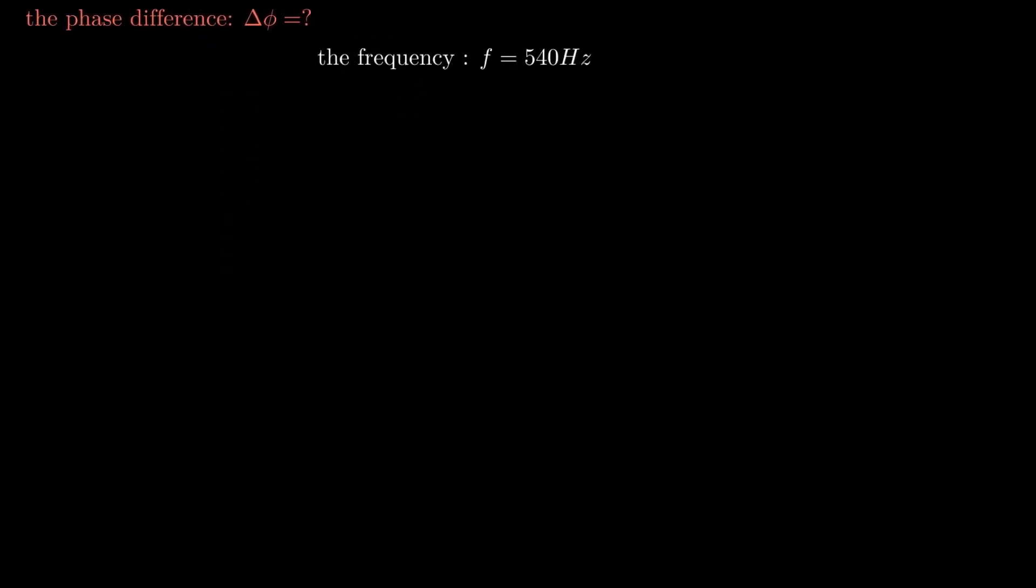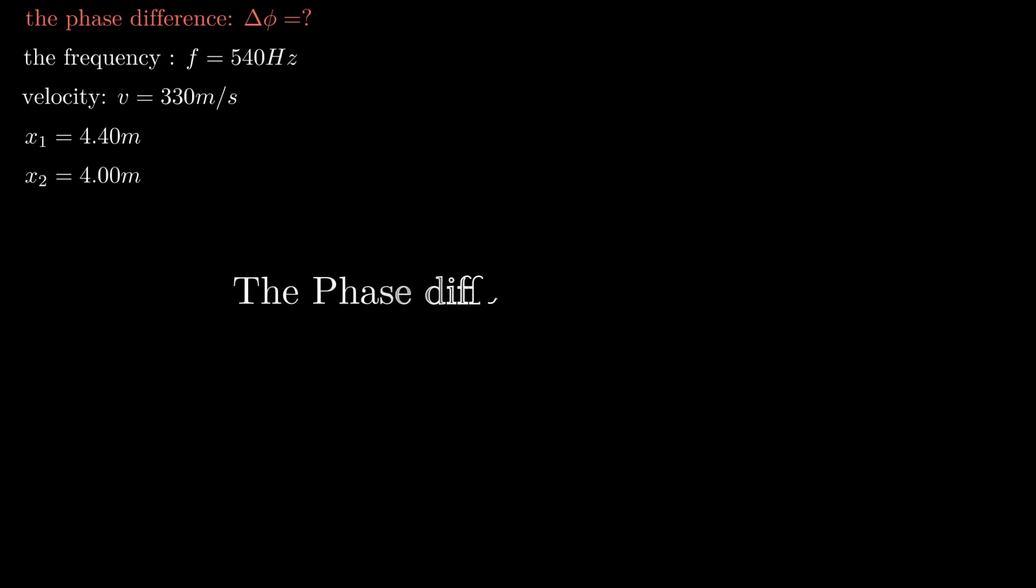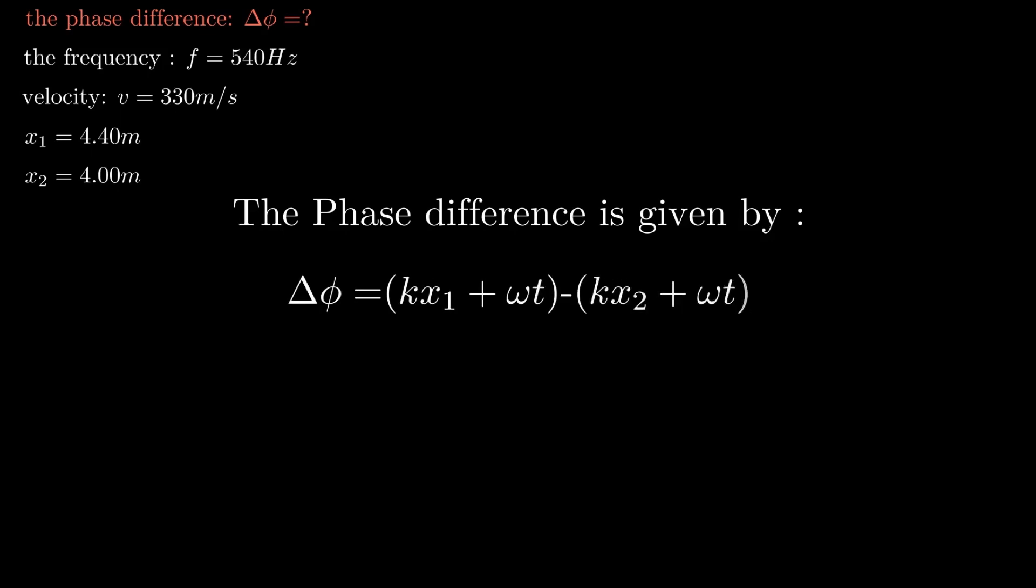Let us write the data: phase difference, frequency, velocity, x1, x2. The phase difference is given by this equation: delta phi equals k x1 plus omega t minus k x2 plus omega t, where wave number k is 2π divided by lambda, and omega is 2π f. We will replace k and omega with these values.